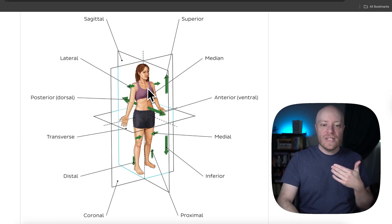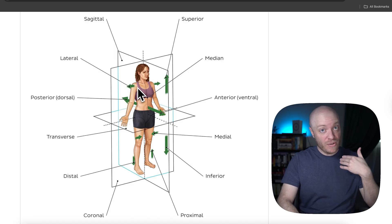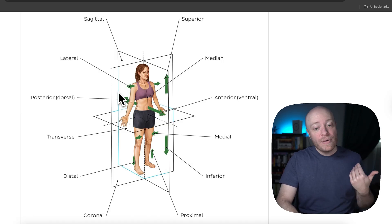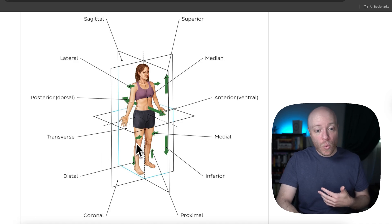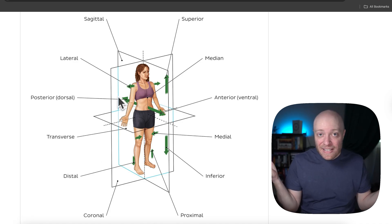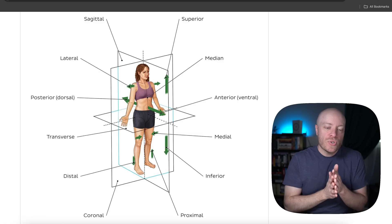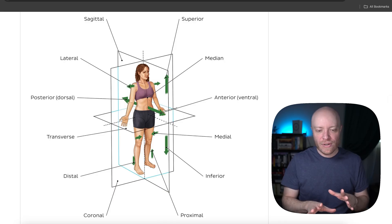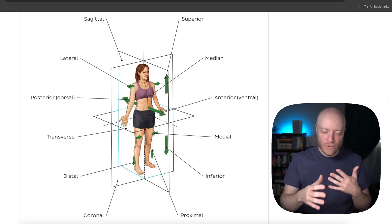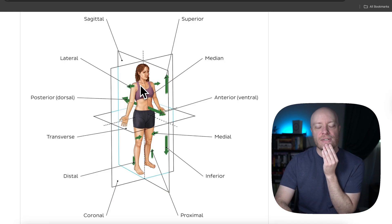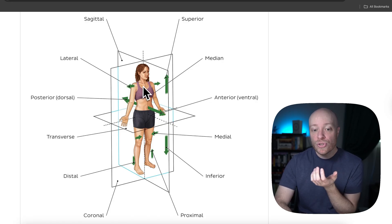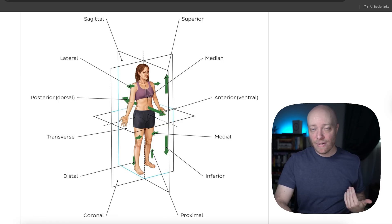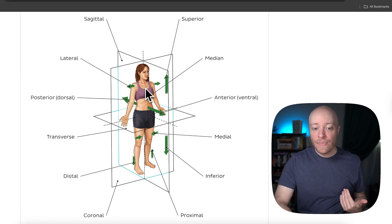If you imagine a centerline through the body, you can see two arrows on the thigh going towards the midline — that is the medial direction. Medial means you are going towards the midline. Lateral, on the other hand, means going away from the midline — you can see the arrows at the shoulders going away. Medial is towards, lateral is away. That is basically it.